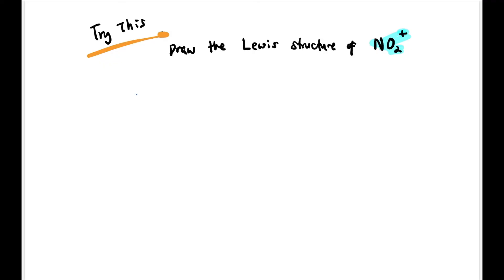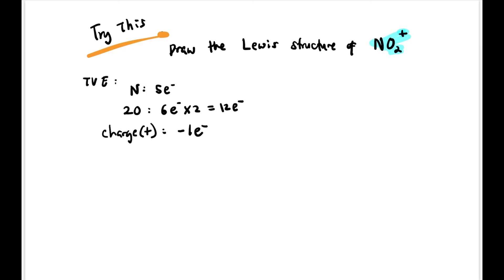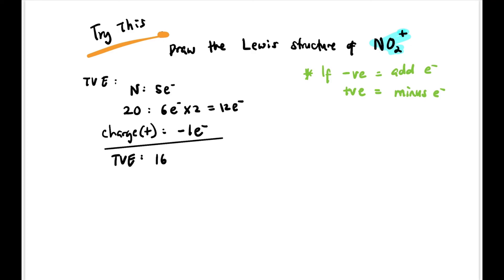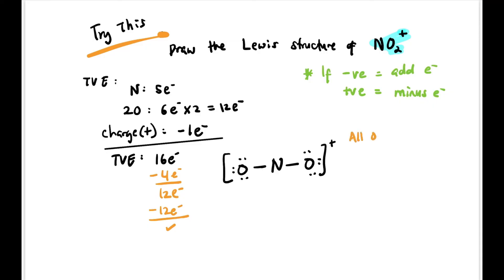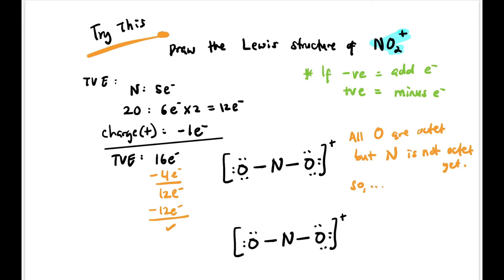Let's draw the Lewis structure of NO₂⁺. TVE: nitrogen has 5 electrons, two oxygens give 6×2=12 electrons. The charge is positive, so we subtract 1 electron. Remember: for negative ions we add electrons to the TVE; for positive ions we subtract, based on the magnitude of the charge. So TVE = 16. We draw N with two O atoms, form two bonds (4 electrons used), leaving 12. We place 12 electrons on oxygen — all used. Oxygens are octet, but nitrogen is not. We erase lone pairs and form double bonds on both sides. Now all atoms are octet: nitrogen (1–8), and both oxygens (1–8).